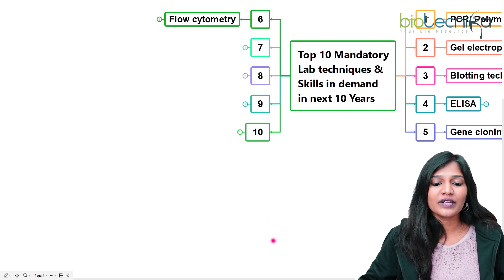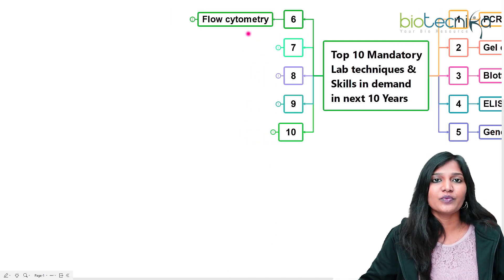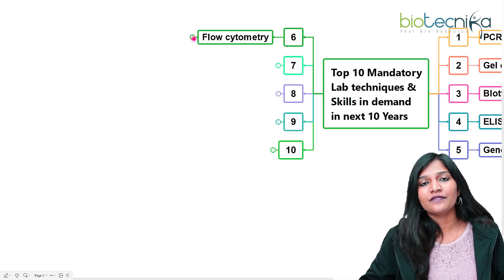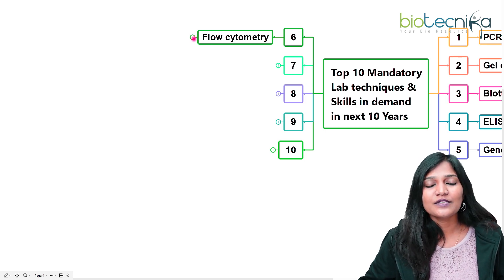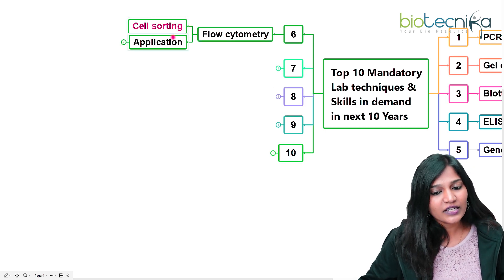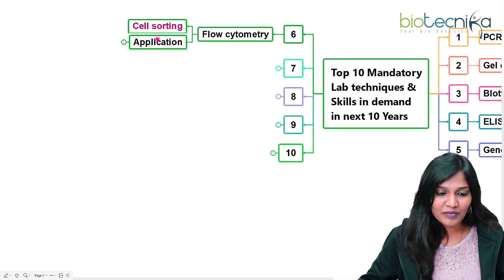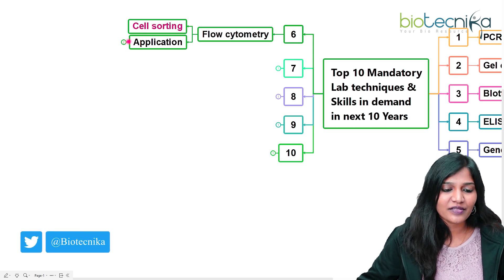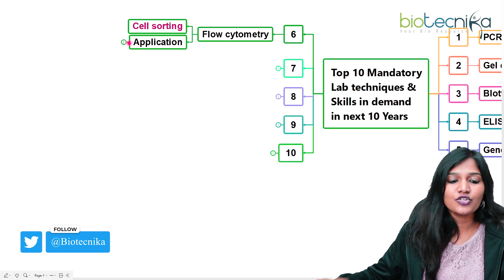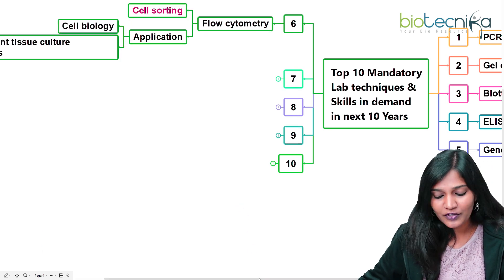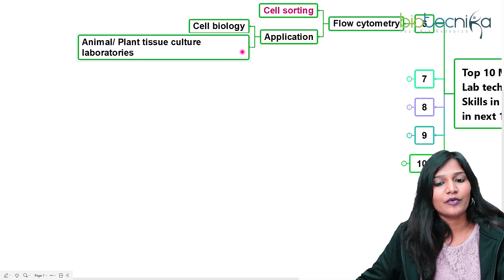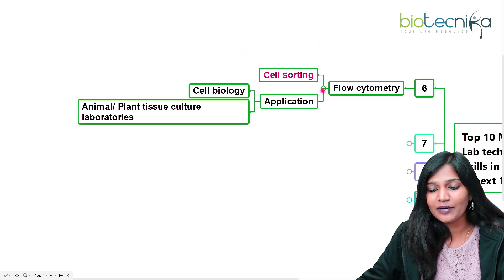The next important technique is flow cytometry, which we also call FACS — fluorescence activated cell sorter. If there is a group of cells, we can isolate specific cells from that group. Cell sorting is the main purpose of flow cytometry, and it is a very important method for cell-based research, specifically useful in cell biology and animal or plant tissue culture laboratories.